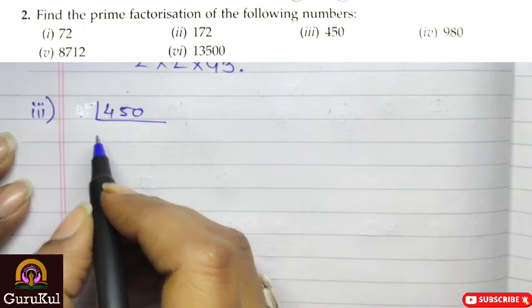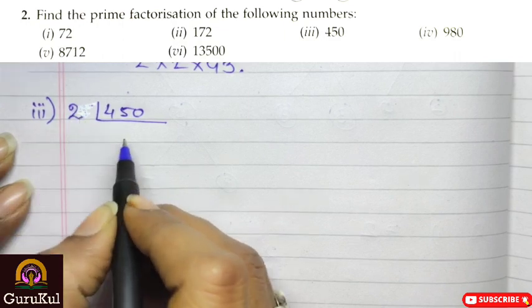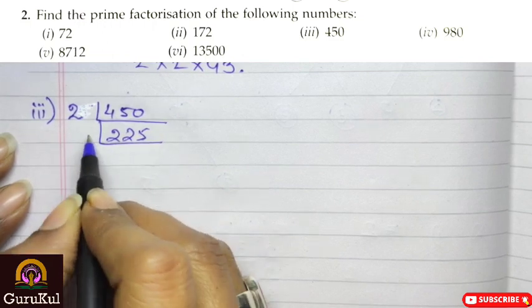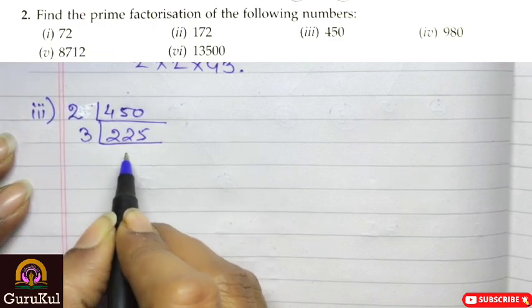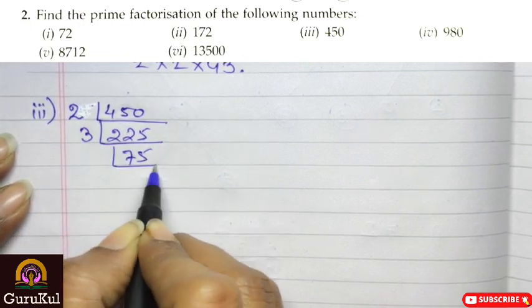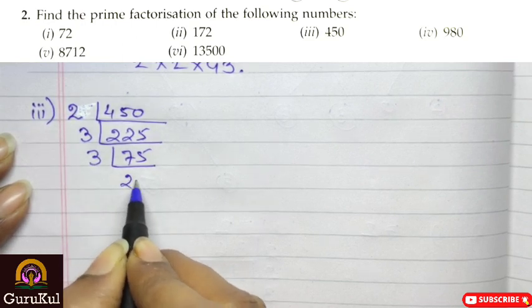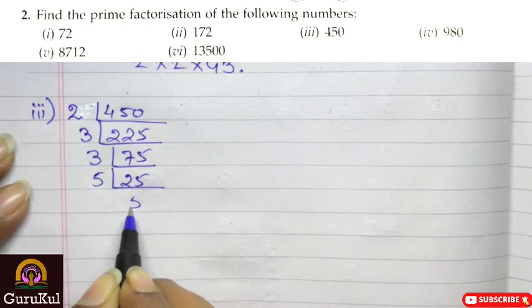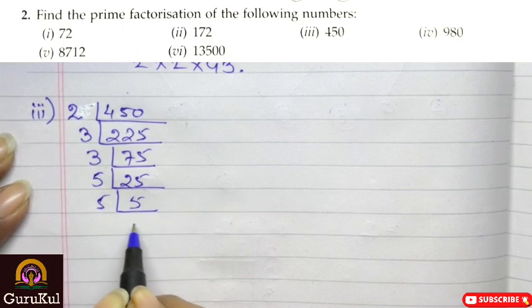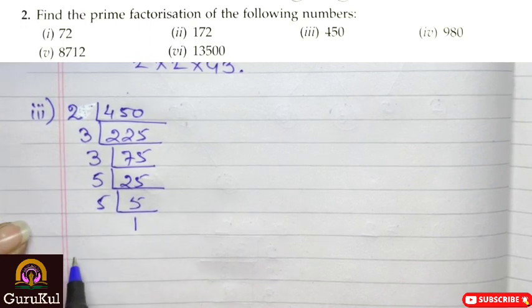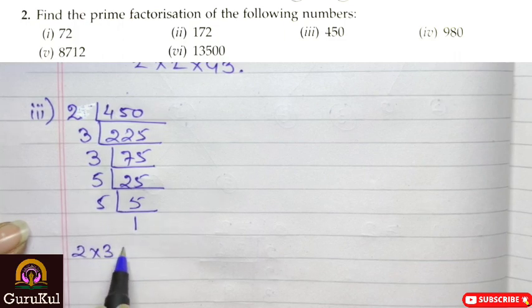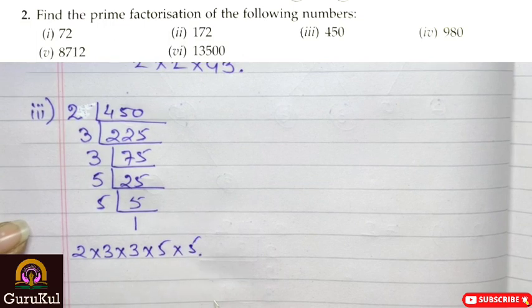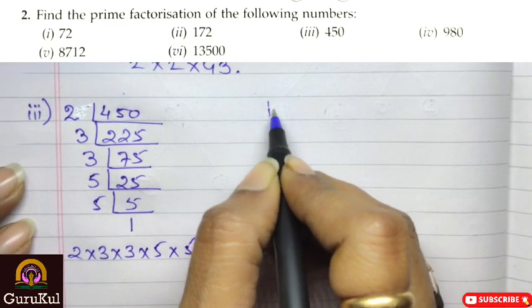Third number is 450. Starting with 2: 450 ÷ 2 = 225. Next, 225 ÷ 3 = 75, ÷ 3 = 25. Then 25 ÷ 5 = 5, ÷ 5 = 1. Hence the prime factorization of 450 is 2 × 3 × 3 × 5 × 5.